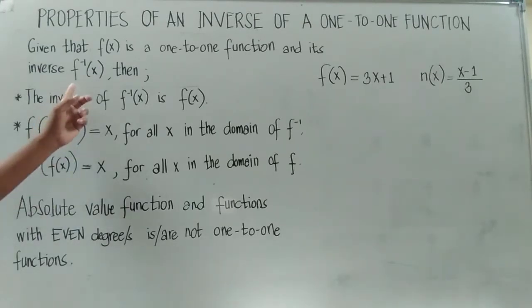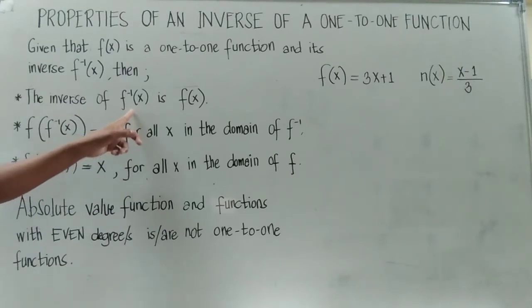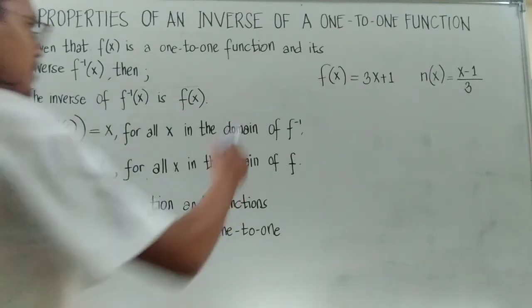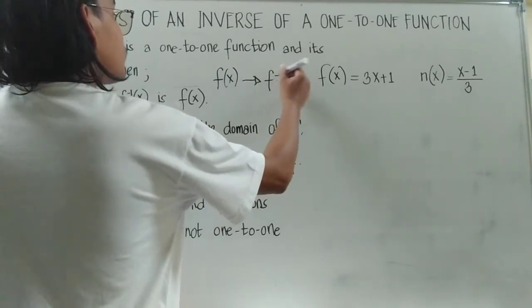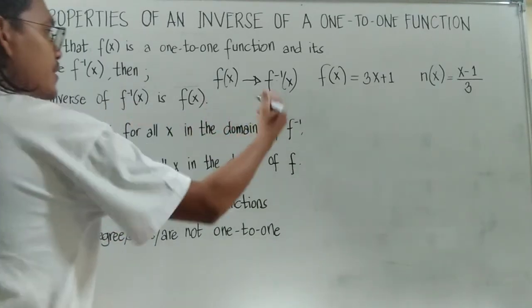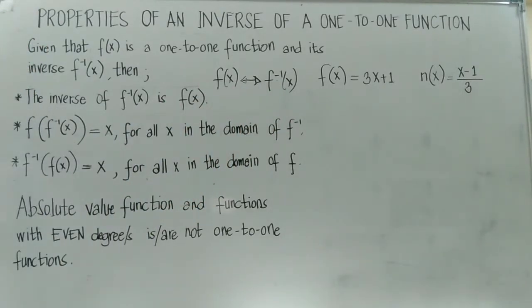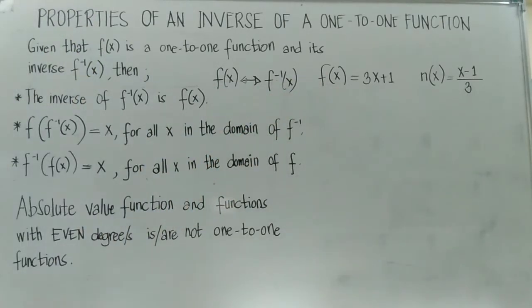Property number one: the inverse of the inverse of f of x is f of x. To illustrate, the inverse of f of x is this expression, and the inverse of that is f of x again. So we are clear on property number one.